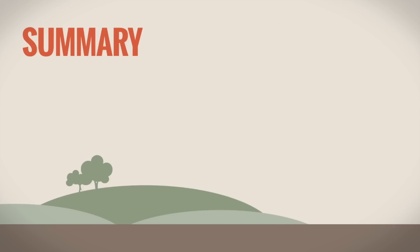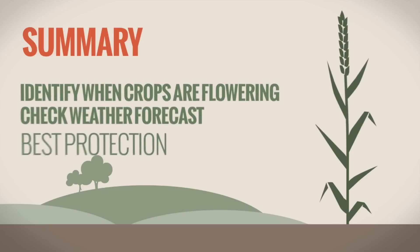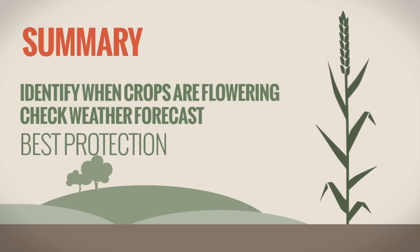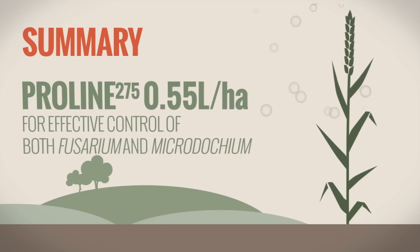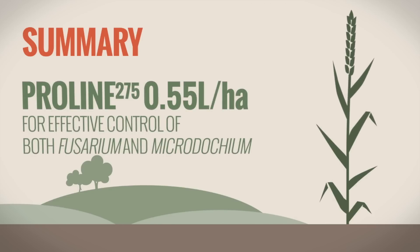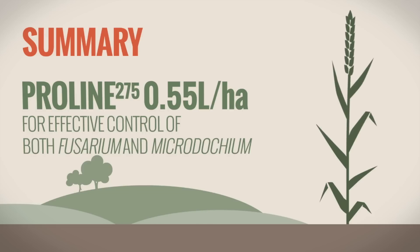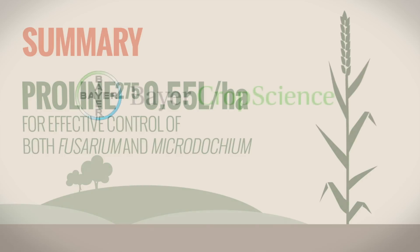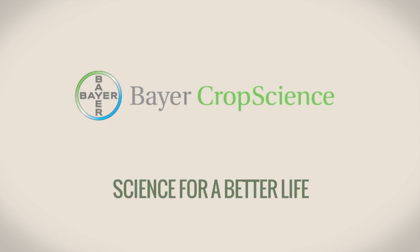In summary, identify when crops are flowering and check the weather forecast to time sprays in order to provide the best protection. Spray a minimum of 0.55 litres per hectare of Proline 275 for effective control of both Fusarium and Microdocium. Bayer Crop Science — Science for a better life.